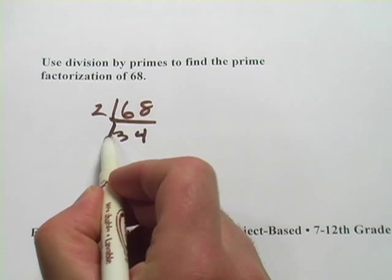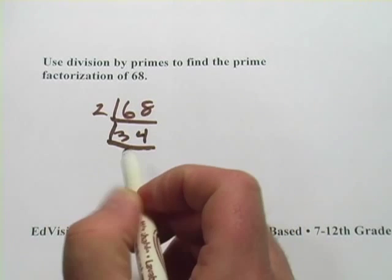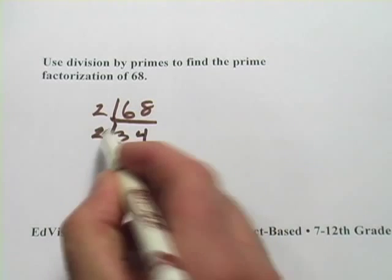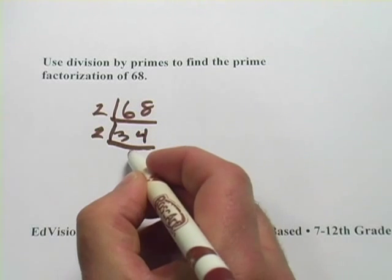And I'm going to divide that by something as well. So 34, well that's even. I'll divide by 2 again. And 34 divided by 2 is 17.